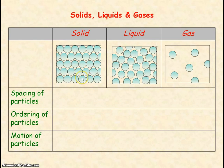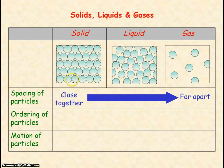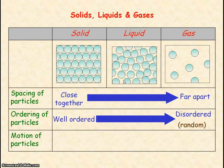Here we can see the arrangement of the particles for a solid, liquid and gas, and you can see that the spacing between the particles increases as you go from solid to liquid to gas. The ordering of the particles starts with it being well ordered — a set regular arrangement — to a liquid being less ordered, less regular arrangement, to being disordered with no regular arrangement of the particles.